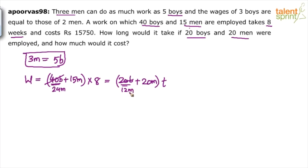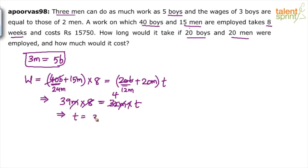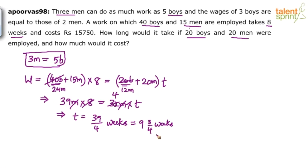So 24 plus 15 is 39. 39 men can do the work in 8 weeks. The same work has to be done by 12 plus 20, which is 32 men. M gets cancelled, and 8 divided by 4 simplifies, giving us the time required as 39 by 4 weeks. That is 9 and 3/4 weeks, or approximately 69 days. So the answer for time is 39/4 weeks, or 9¾ weeks.